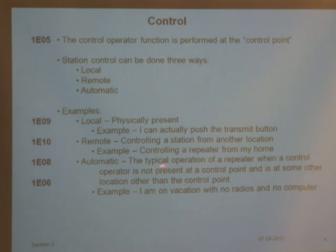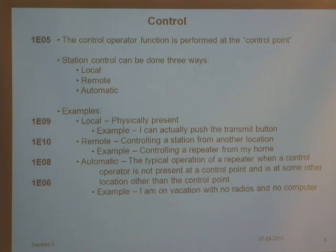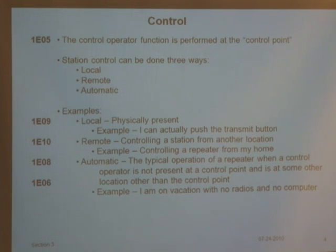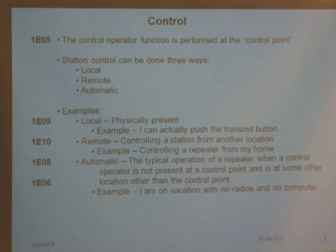Automatic control is the typical operation of a repeater when a control operator is not present at the control point. If the repeater owner is going out of town, he codes the repeater into automatic mode. That means if it senses any electrical problem, it shuts itself down. In the old days, you had to be physically at the radio, but now things can be controlled remotely or automatically.